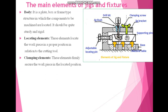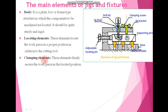Then we have clamping devices. Here we have a clamping screw. With the help of these clamping devices, the workpiece is firmly secured in the previously specified located position. This is the basic function of the clamping device. With the help of these clamping elements, we can firmly secure our workpiece in the specified located position.